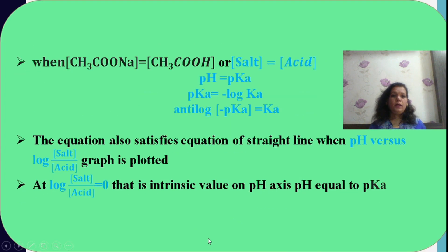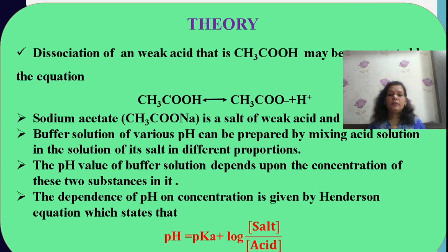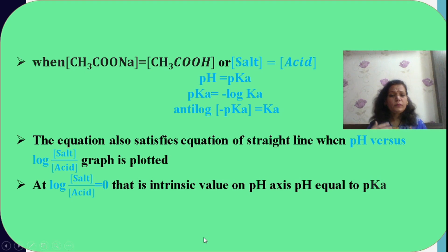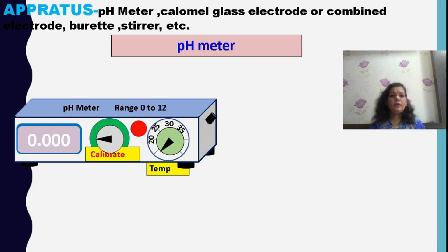We will see how it is possible. When I am taking salt and acid in a mixture, pH equals pKa — this is possible when the concentration of salt and acid becomes equal. That means if the concentration of salt and acid are equal, the log([salt]/[acid]) term becomes zero, so pH = pKa. And I can easily find out the value of Ka. So, when log of salt upon acid equals 0, that is the intercept value on the pH axis where I can find out pKa.